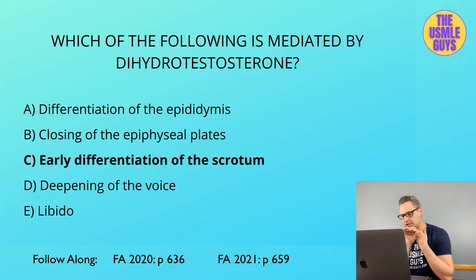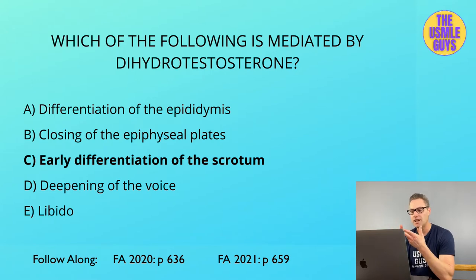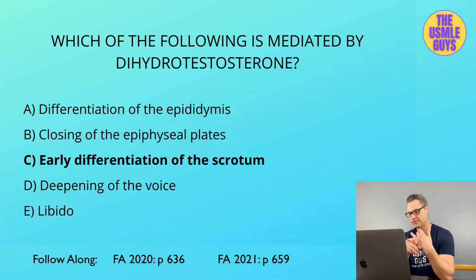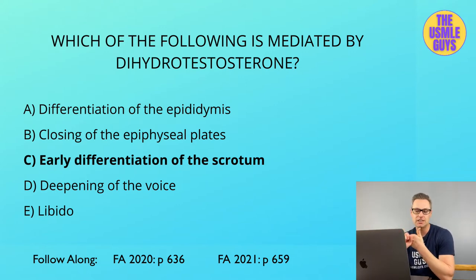DHT in early development is needed for the normal differentiation of the penis, prostate, and scrotum. Later, it's responsible for balding — which we can prevent with finasteride, a 5-alpha reductase inhibitor. Additionally, DHT later on can be responsible for growth of the prostate and increased sebaceous gland activity.